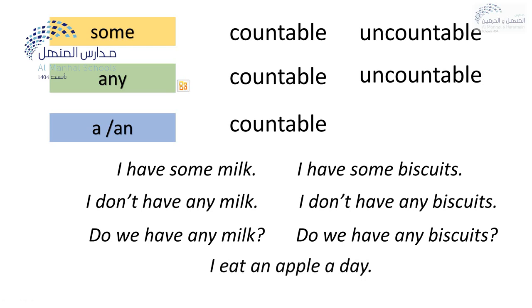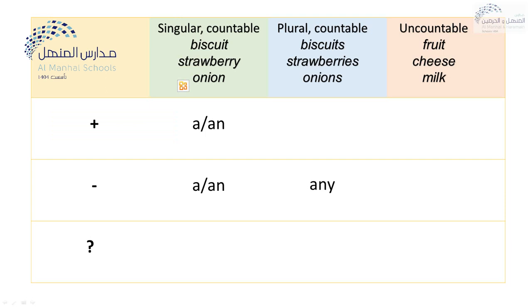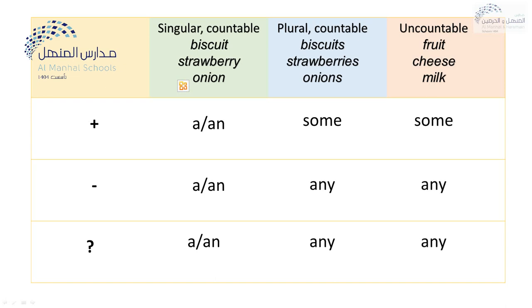I eat an apple a day — so we use a or an for this. This is the review of the lesson. We use a, an for singular countable nouns like biscuits, strawberry, onion. For plural we use some or any for countable nouns. For uncountable nouns we can also use some or any — for both.